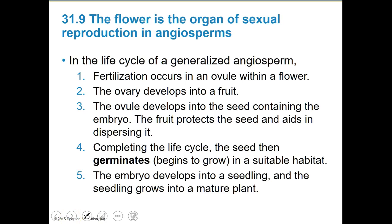There is a lot to this. We'll look at the words and highlights together, and go through a diagram. This might be a time where you pause and refer back to the general diagram and see where we are on the cycle — we're still doing alternation of generations. In the life cycle of a generalized angiosperm, fertilization occurs within the ovule within the flower. The ovary will develop into a fruit. The ovule will become the seed.